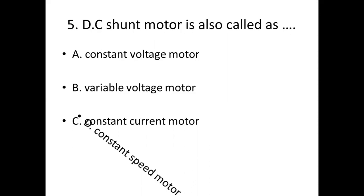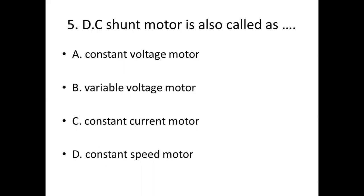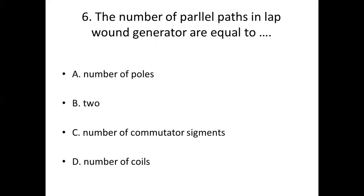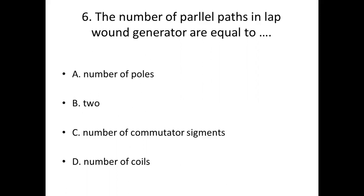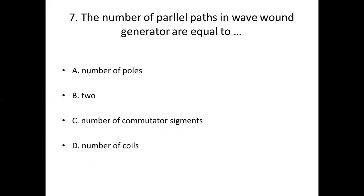Fifth bit: DC shunt motor is also called as — Option A: constant voltage motor. Option B: variable voltage motor. Option C: constant current motor. Option D: constant speed motor. Answer: Option D, constant speed motor.